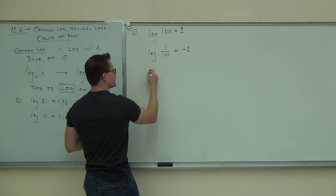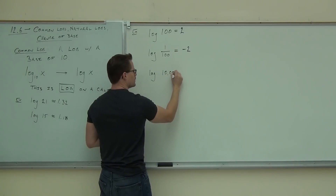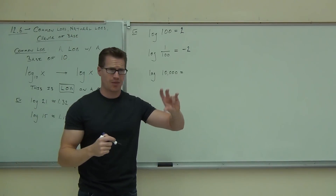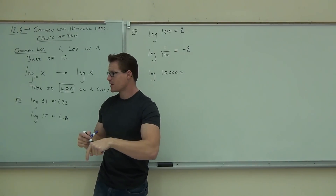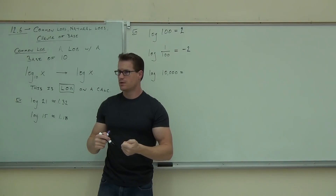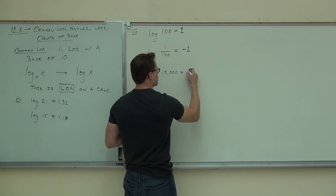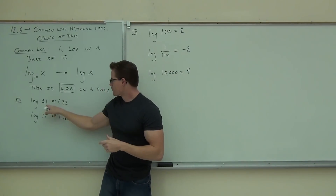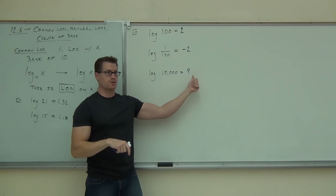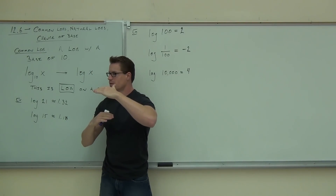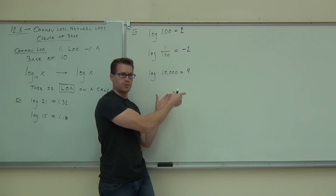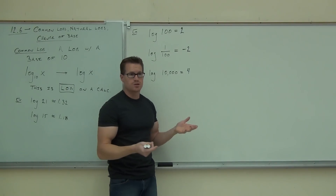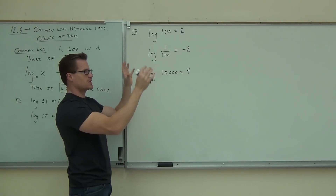What about log of 10,000? It's asking what power do you need to take 10 to in order to get 10,000. Your log button will do it — it's going to give you 4, because 10 to the 4th is 10,000. Notice: log of 21 is 1.32, but log of 10,000 is only 4. That's not a very wide range of numbers because base 10 grows very quickly. This is why people back in the day used logarithms to represent big numbers with very small numbers.